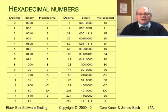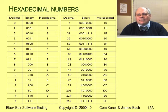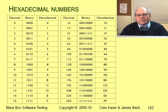Along with binary digits and decimals, we often talk about hexadecimal numbers. In a hexadecimal digit, the values run from 0 to 15, instead of 0 to 1 or 0 to 9.